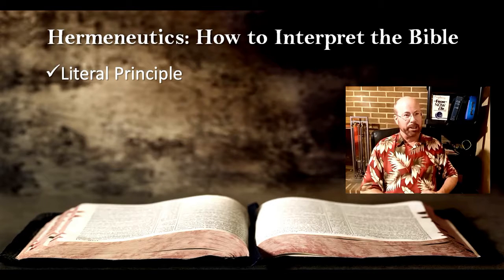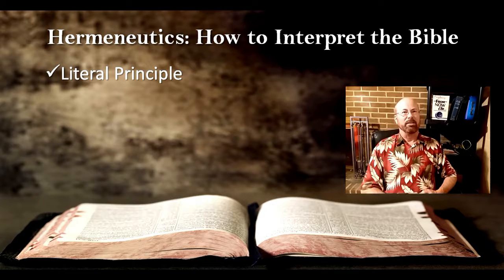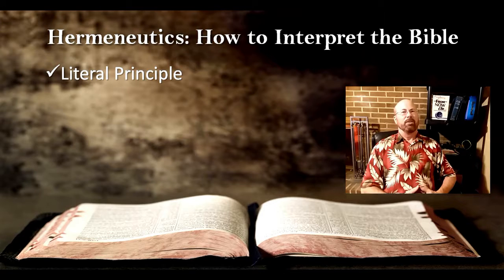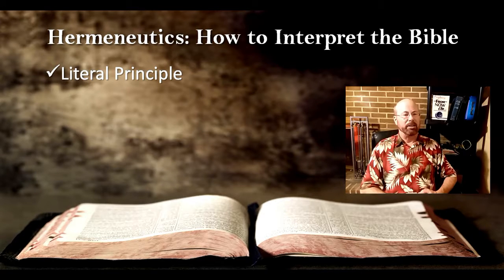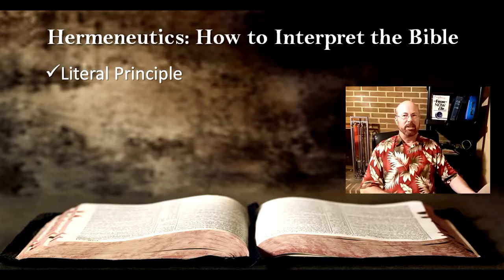Most any other book will have symbolic language in it too. When we come across, for instance, in the Psalms, it will say, 'He covers thee with his feathers, and under his wings shalt thou rest.' This is not to say that God is Big Bird. What this means is that God is like a mother hen, and that he covers us and protects us. That's symbolic language we understand simply by looking at the context. Do not confuse literalism with letterism — we are not saying we apply letterism to the Bible in a way that makes God look silly. God is not a giant chicken.